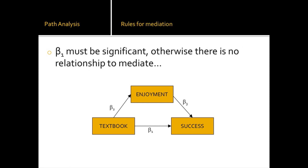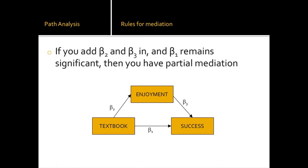So your rules for mediation — there are a couple of different schools of thought. The start of it is that if you are to have a relationship that is to be mediated, that initial relationship should be significant in the first place. So if there's nothing there — if textbook choice is unrelated to success — there's no relationship to mediate or be explained. If you add in the enjoyment variable and that beta one remains significant, you have partial mediation.